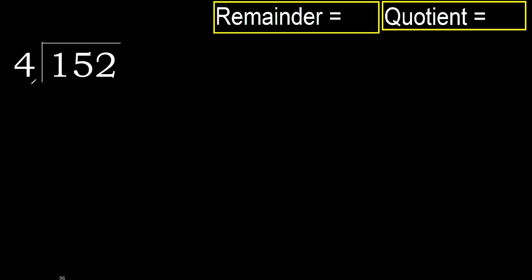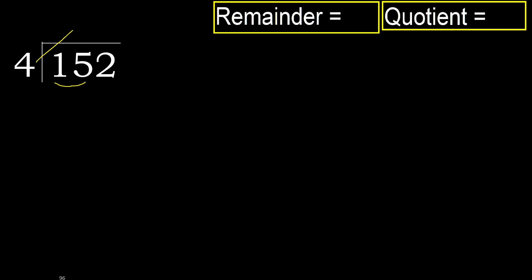152 divided by 4. 1 is less, therefore next. 15 is not less, therefore with 15: 4 multiplied by which number is nearest to 15?